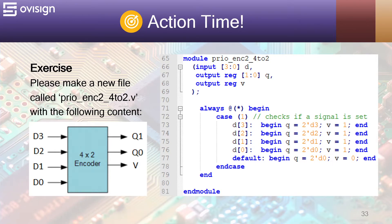The default from line 77 will trigger when all the case lines return a 0 value, which is valid only when d equals 0. Case 1 is a widely used design technique because it generates predictable results for both design and verification tools.